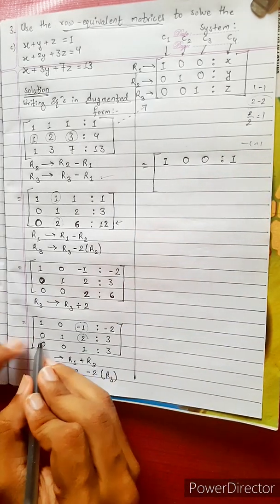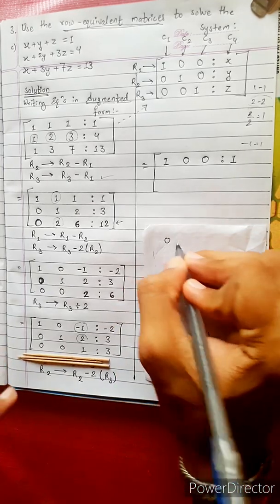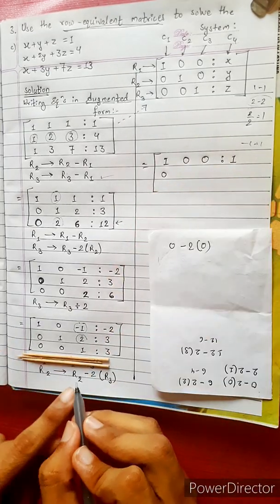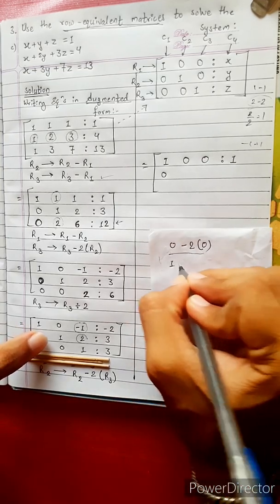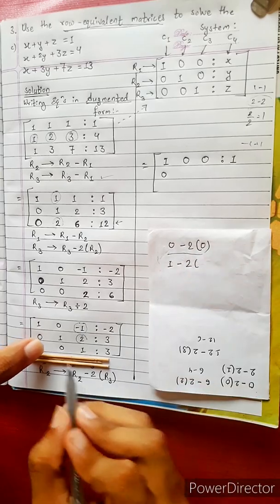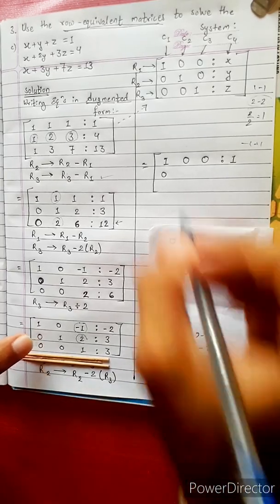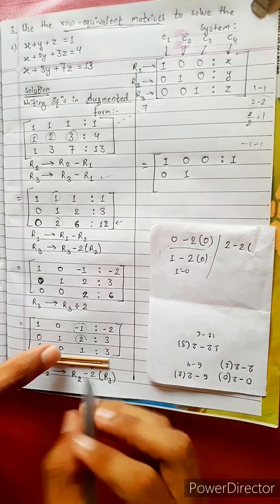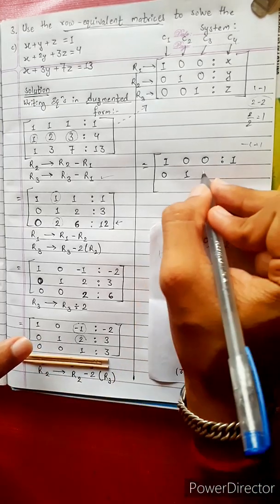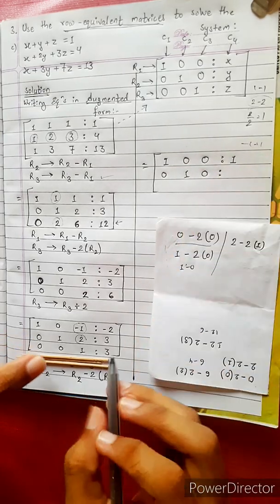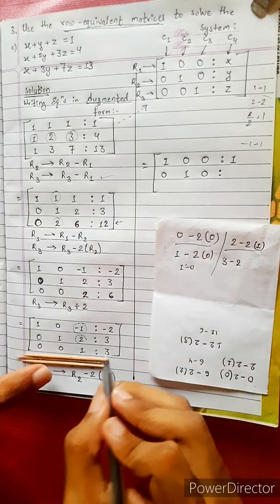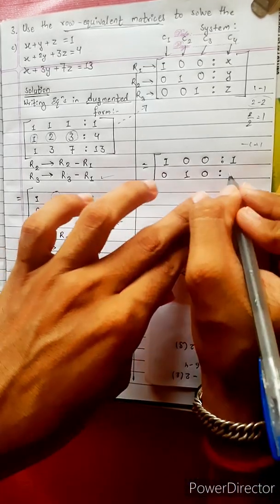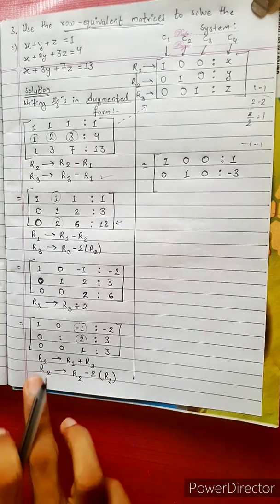R2 minus 2 times R3: R2 is 0, minus 2 times R3 gives 0 minus 0 = 0. R2 minus 2 times R3: 1 minus 2 times 0 = 1. 2 minus 2 times 1 = 0. R3 gives 3 minus 2 times 3 = 3 minus 6 = minus 3. R3 result is 0, R2 is 0.